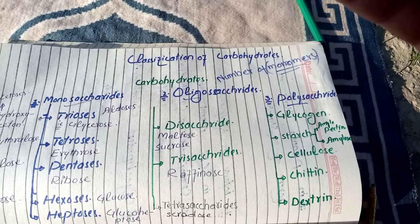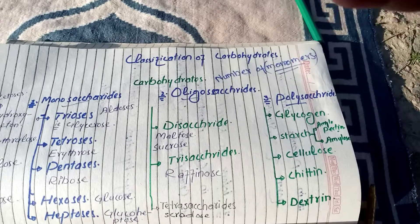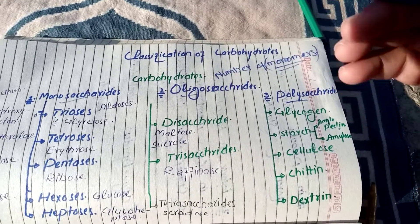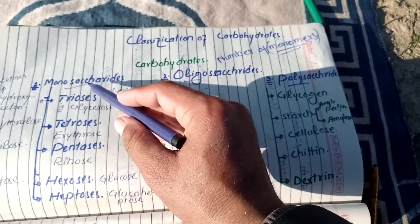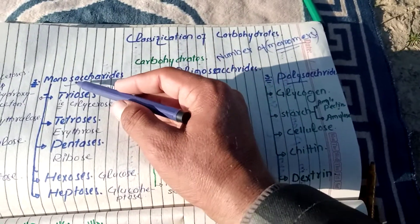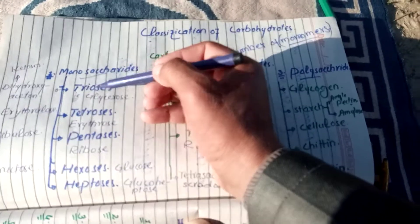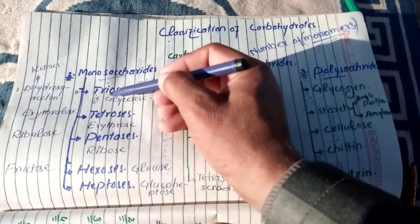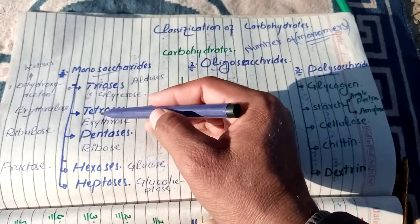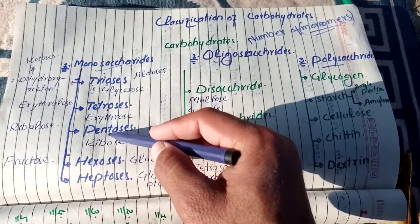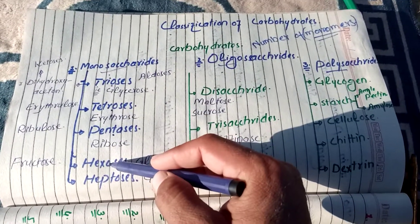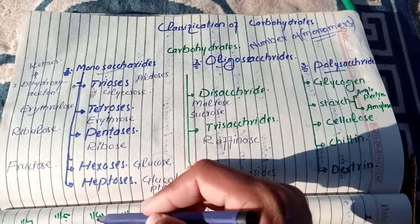Yeh kitne monosaccharide mein hai, kitne units oligosaccharide mein hai, kitne polysaccharide mein hai. Monosaccharide ki further classification hai triose, tetrose, pentose, hexose aur heptose mein.